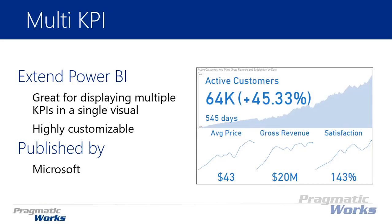As you can see on the right hand side, we're looking at one primary measure — the active customers — as the KPI on the top, and then we have these little sparklines on the bottom where we're seeing supporting information like the average price, gross revenue, and customer satisfaction. Those things are supportive of our active customers, and you can have these little sparklines showing below the Multi KPI as a good supporting metric.